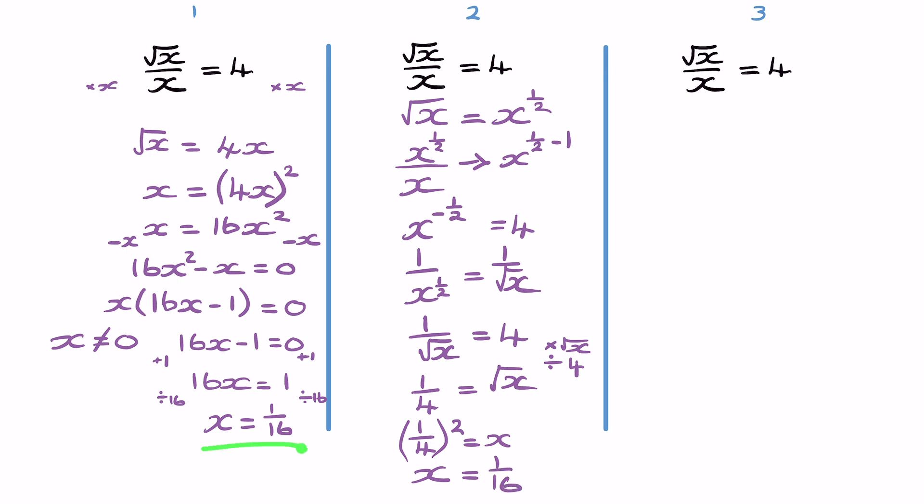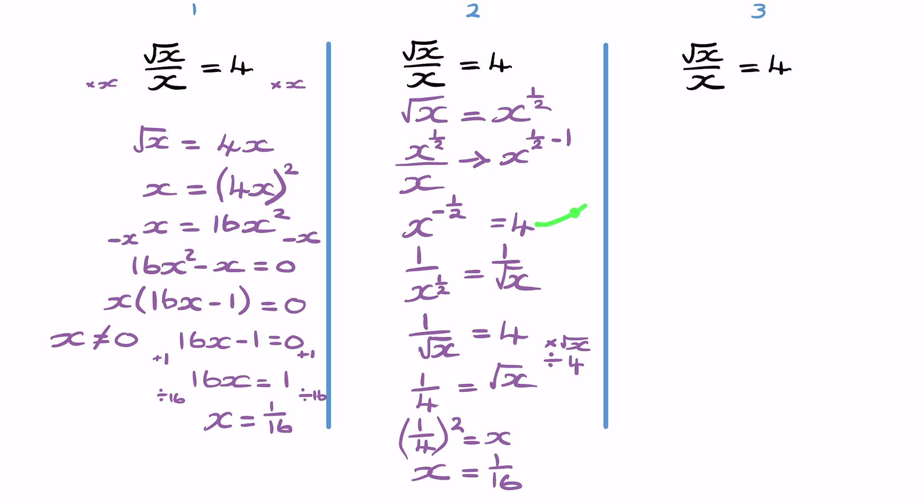Same as we had on method 1. Now with method 3, this is probably, I think, the purer method. So method 3 is actually going to lead on from here, x to the negative half equal to 4. Now I want to get rid of the negative half power, so I'm going to raise both sides to the power of negative 2.